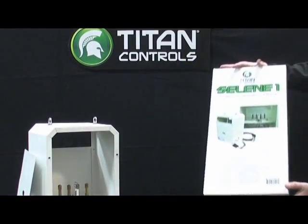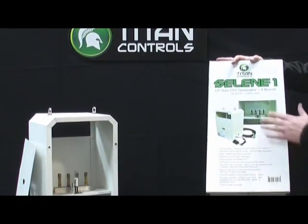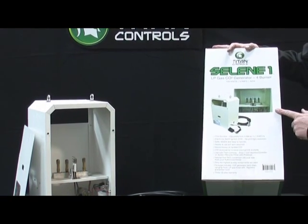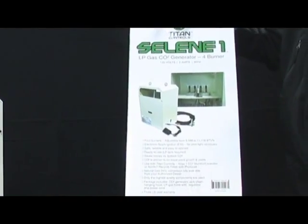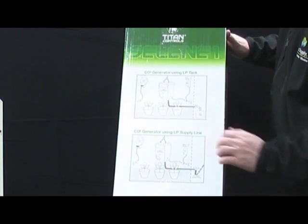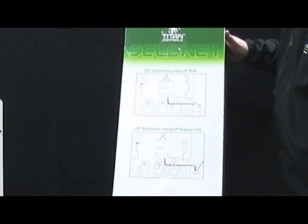You'll note here on the side shows the features and benefits. This Selene 1 comes with the four burners installed and you can see here an example of how it burns. On the other side of the box you'll note that we have exact diagrams to show you how it's to be hooked up.